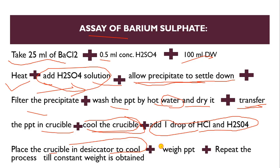After that, weigh the precipitate and repeat the process until a constant weight is obtained. As discussed in the last lecture, the difference between the first and second precipitate weight should be only 0.3 mg or below. Repeat this process until that condition is met. This is how we perform the assay of barium sulfate.